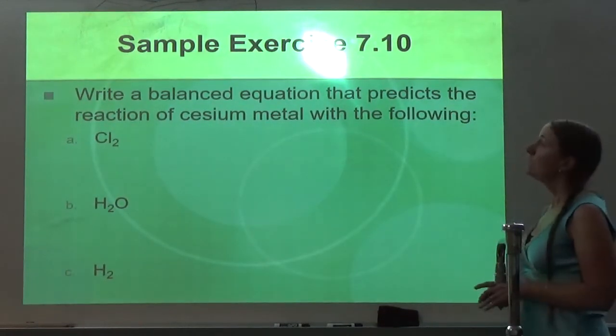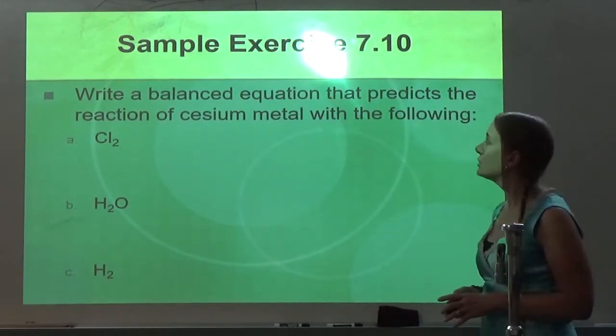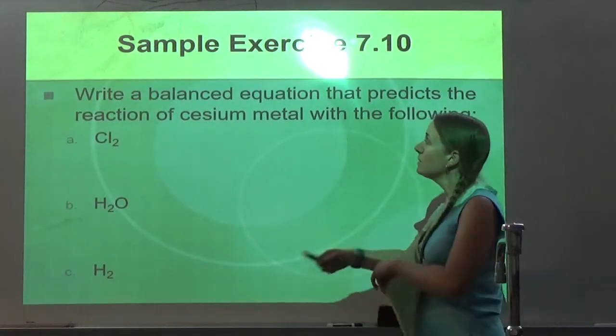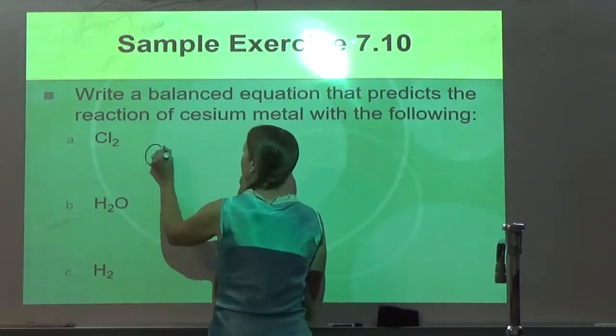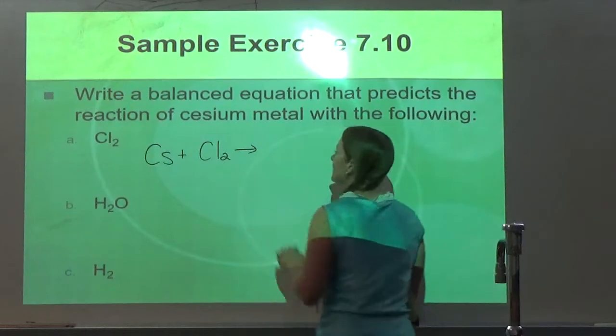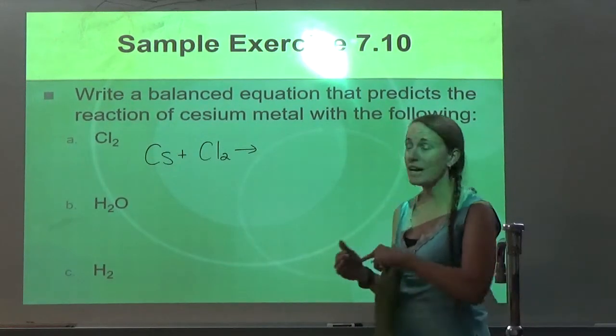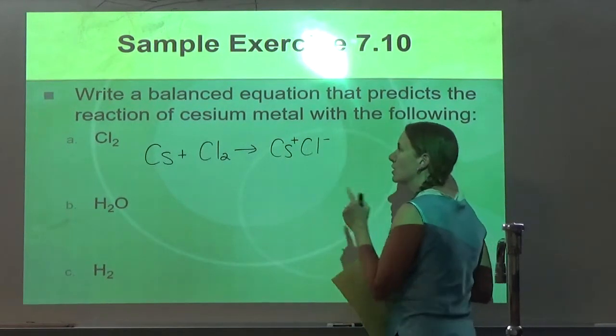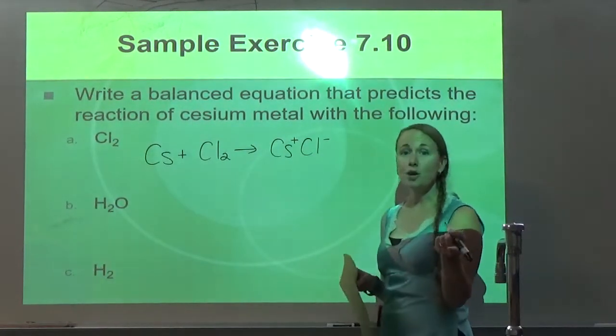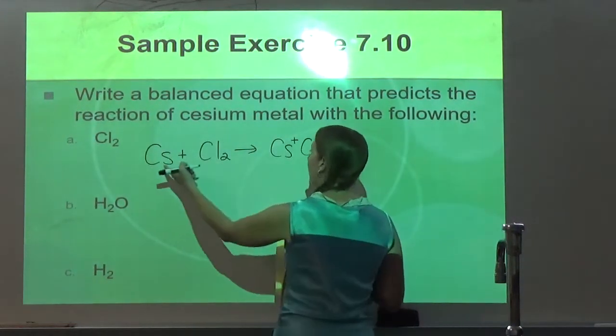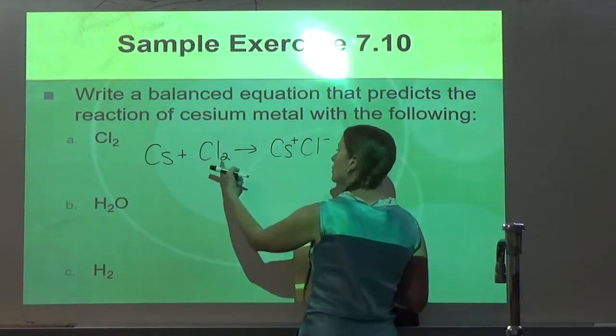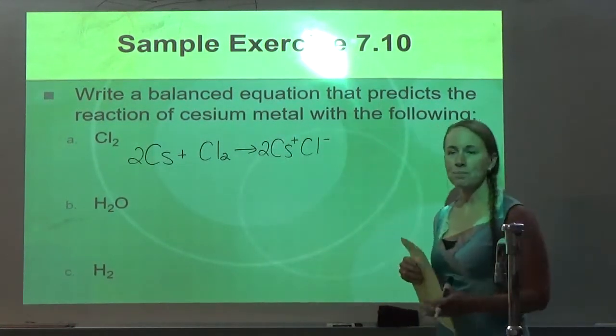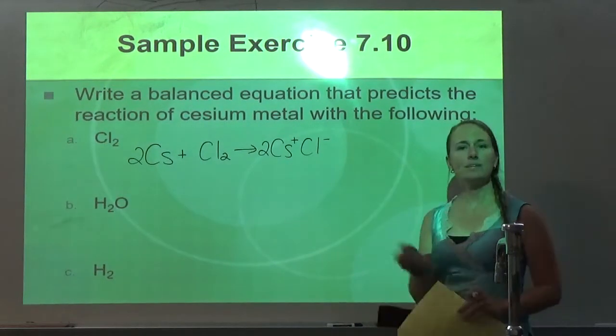Alright, so let's look at some equations. Write a balanced equation that predicts the reaction of cesium metal with the following. First we are starting with cesium metal and chlorine gas. We have cesium, we have chlorine. This is going to be a basic synthesis reaction. So cesium has a positive 1 charge, chlorine has a negative 1 charge. So my charges are balanced. Then I just need to go back and balance the entire equation. I have 1 Cs, 1 Cs, 2 Cls, but 1 Cl. So I'll put 2, but now I have 2 Cs so I need 2 in front of that. So that's just basic synthesis reaction.